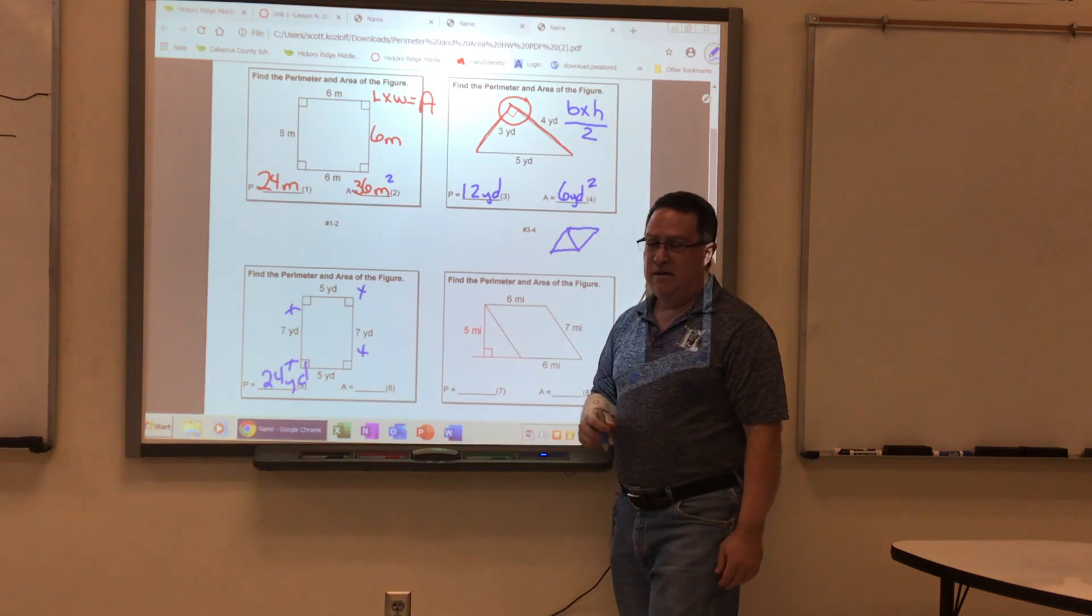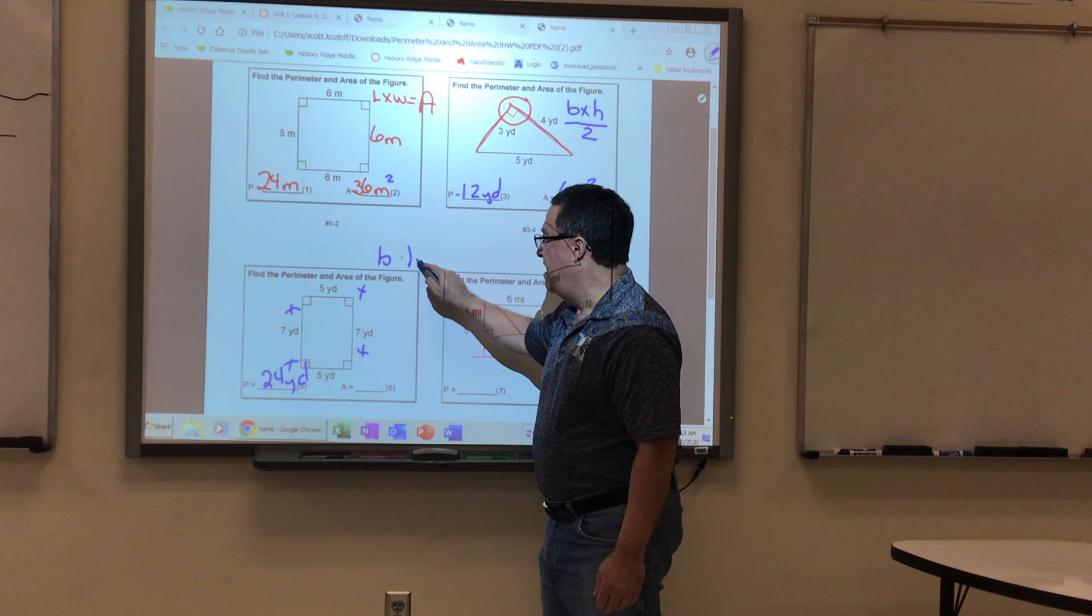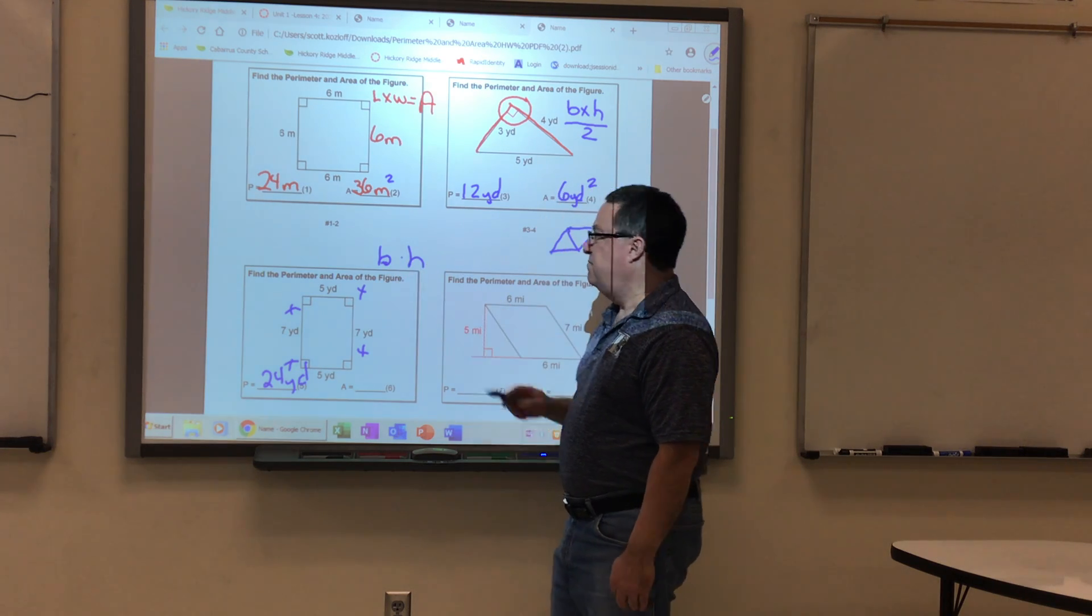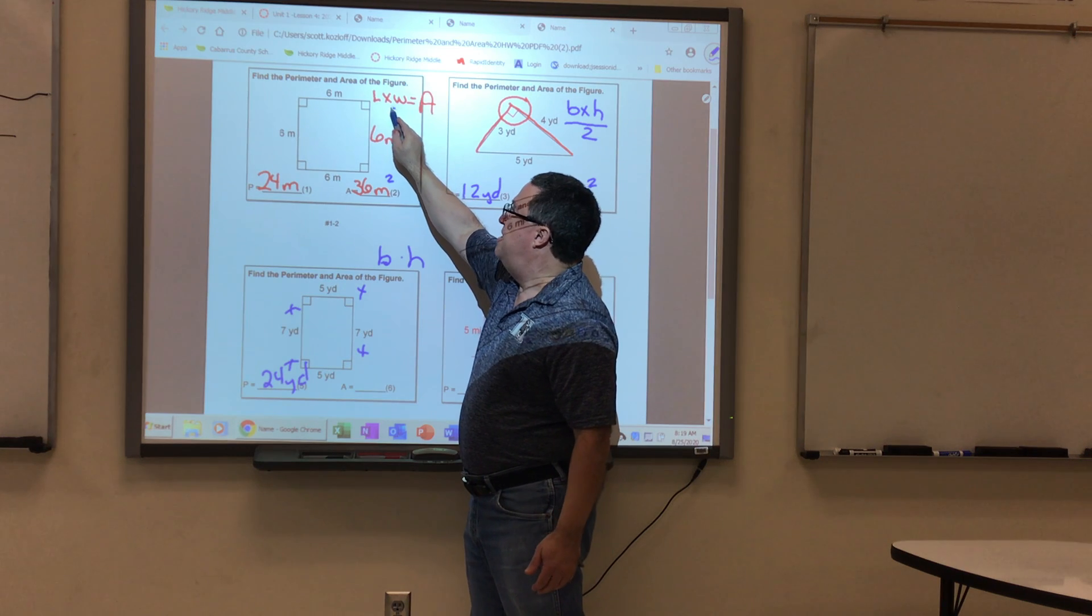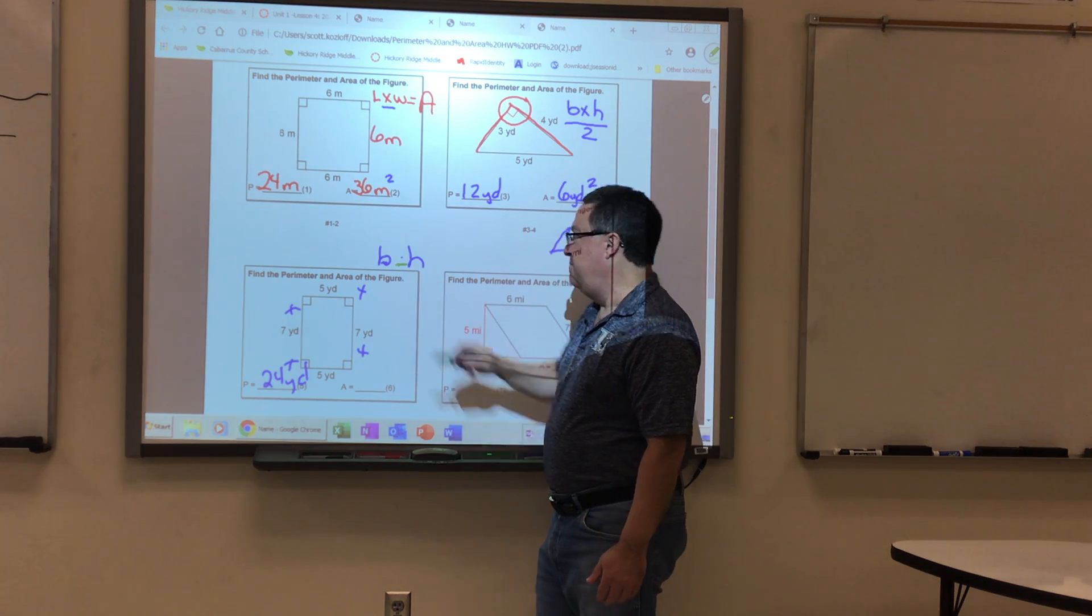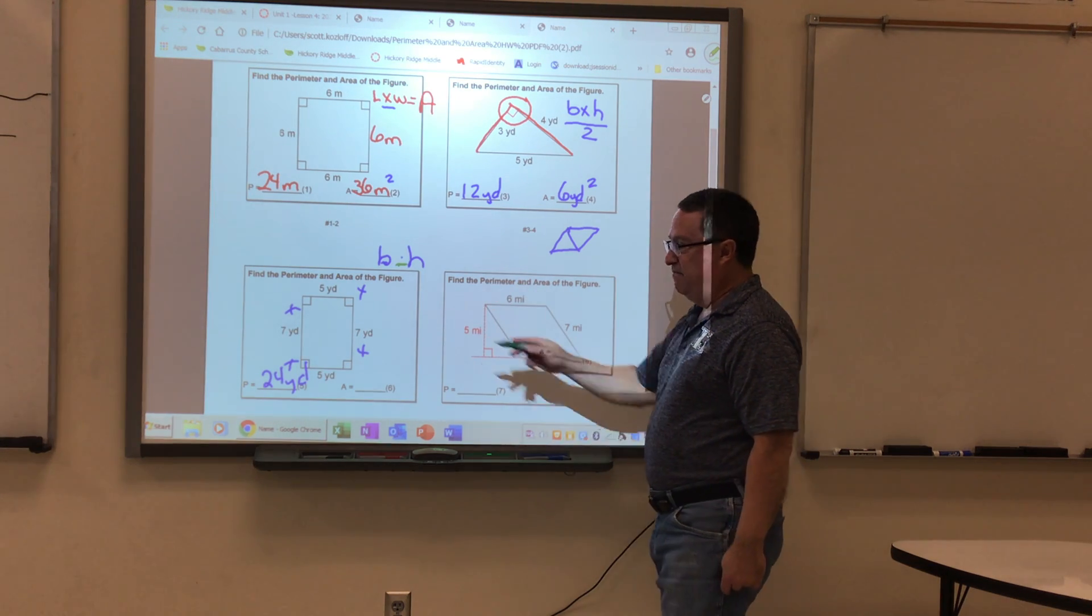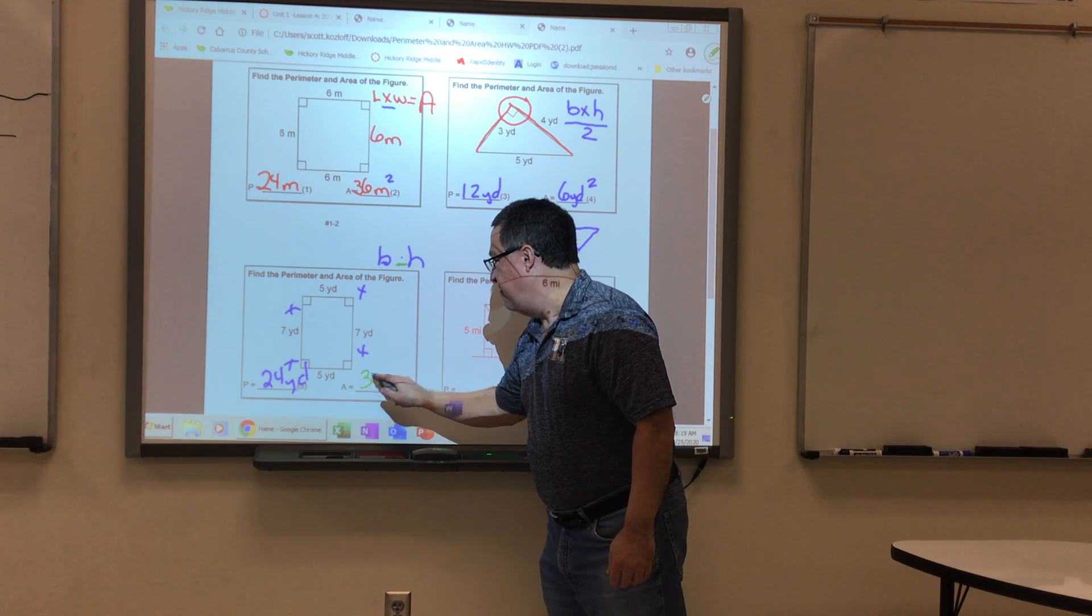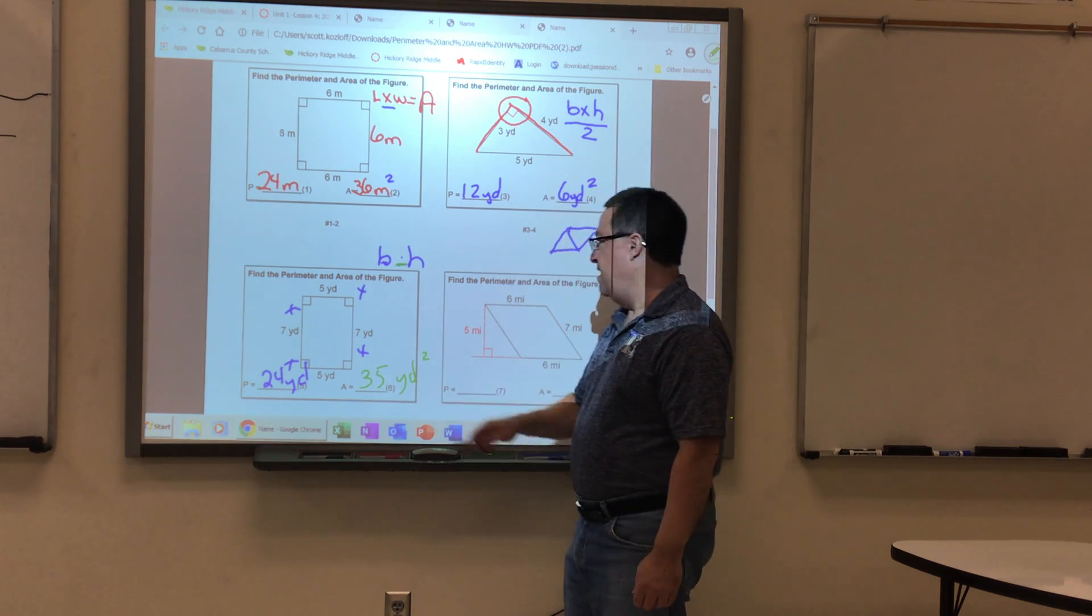For the area, the area of a rectangle is just the base times the height. I wrote this with a dot because I want to make sure you all understand that this sign means multiplication. So a base times height of a rectangle is 5 times 7. 5 times 7 is 35 yards squared.